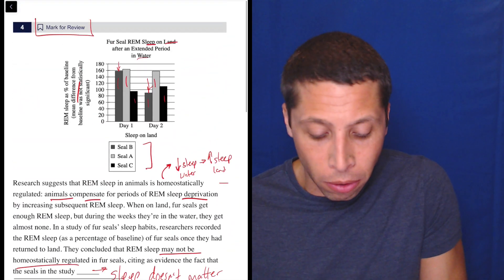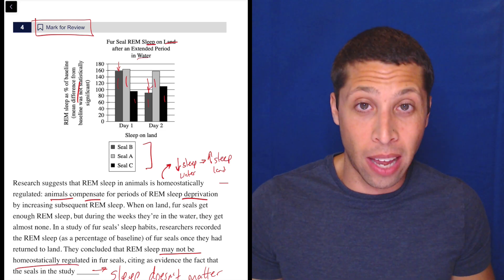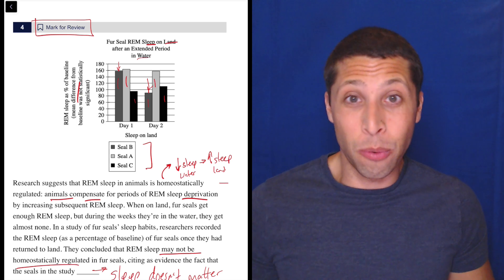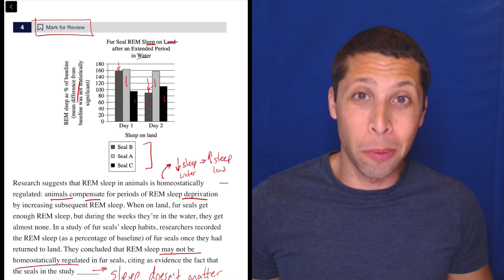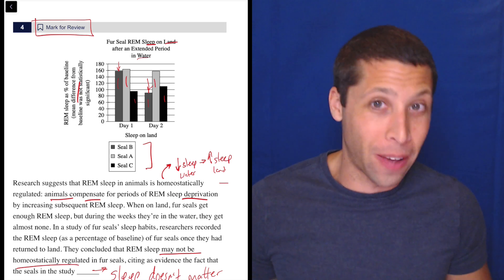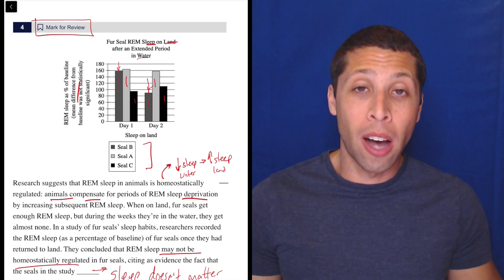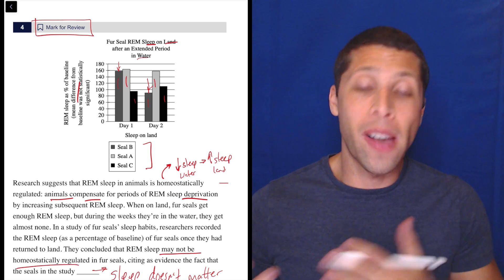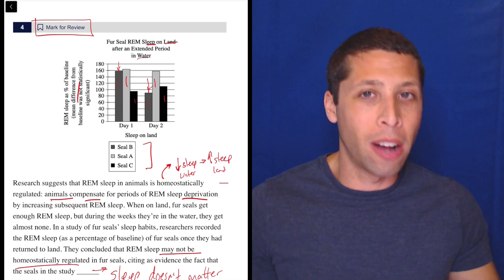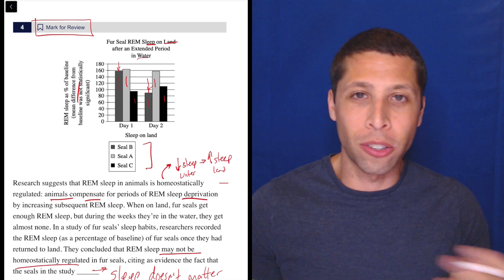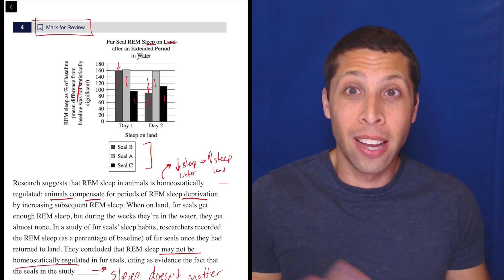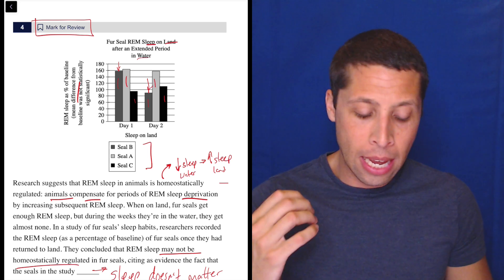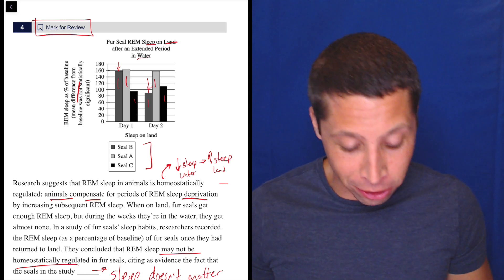I might mark this for review if this were on a test, because I feel like I'm picking it just because I don't understand the other choices. But I do understand C and it works. So I'm going to pick it and hope the others are wrong. Sometimes the very fact that you don't understand something is evidence that it's wrong — if you understand the passage but don't understand a choice, it might just be complete nonsense. Don't force yourself to try to understand it.